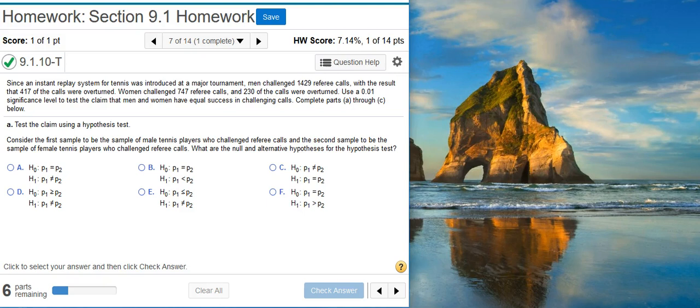Women challenged 747 referee calls and 230 of the calls were overturned. Use a 1% significance level to test the claim that men and women have equal success in challenging calls. Complete parts A through C below.